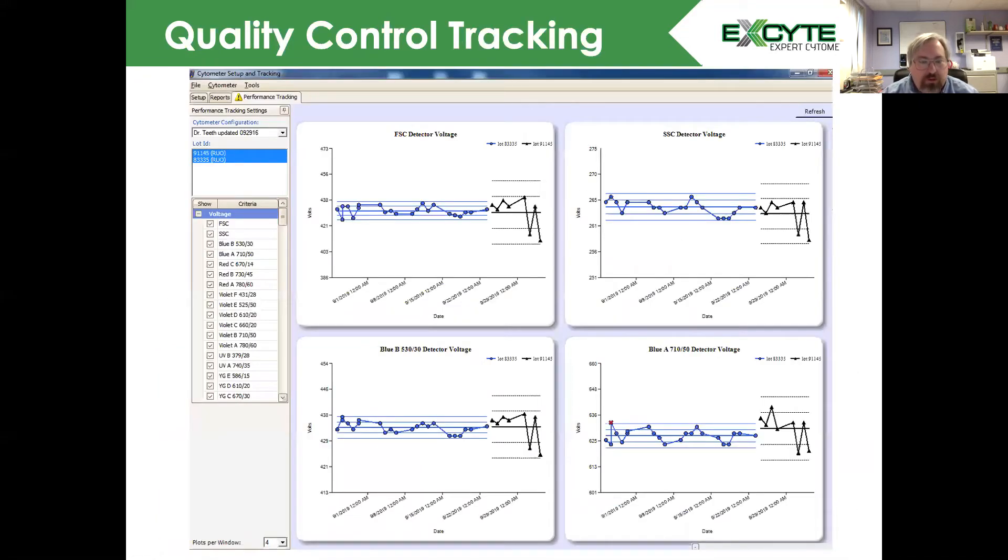An example of a quality control program is here, the CS&T Beads by BD. You can see we're tracking using a Levy Jennings plot, and when there was a change in the bead lot, we saw a different change in the performance of the system. So we would need to characterize that.